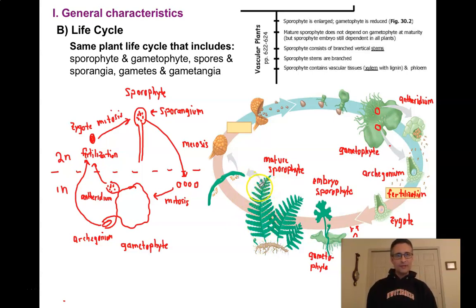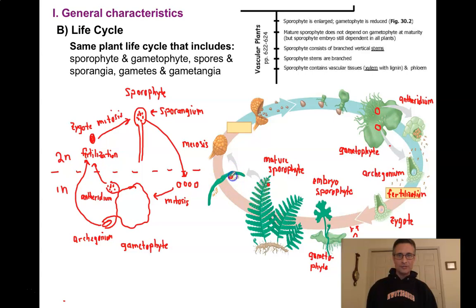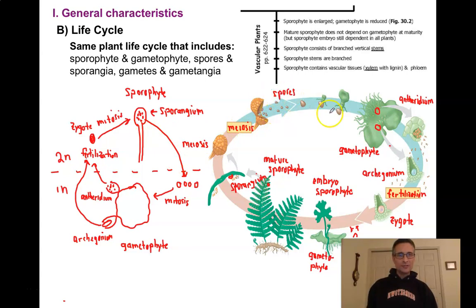Our sporophyte produces many spores in sporangia. Inside the sporangium are lots of spores produced by meiosis. When the sporangium is mature, spores are released. When a spore starts to divide by mitosis, we return to a gametophyte. So to summarize what's changing: we have much smaller gametophytes. Even big gametophytes are like the size of a little fingernail — very small. But our sporophytes are getting much larger.